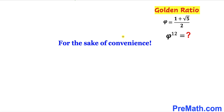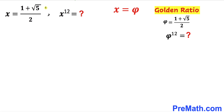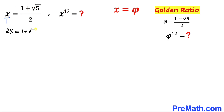For the sake of convenience, let me assume that x equals phi. Then this equation can be written as x equals 1 plus square root of 5 divided by 2. Writing x as x divided by 1 and cross-multiplying, we get 2x equals 1 plus square root of 5.